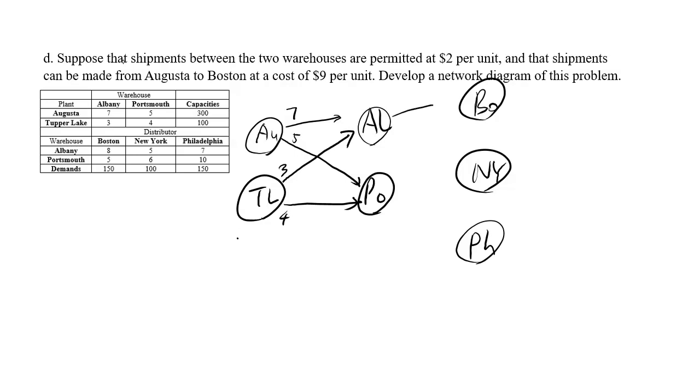Albany to Boston is 8. Albany to New York is 5. Albany to Philadelphia is 7. Portsmouth to Boston is 5. Portsmouth to New York is 6. Portsmouth to Philadelphia is 10. This is the original problem.